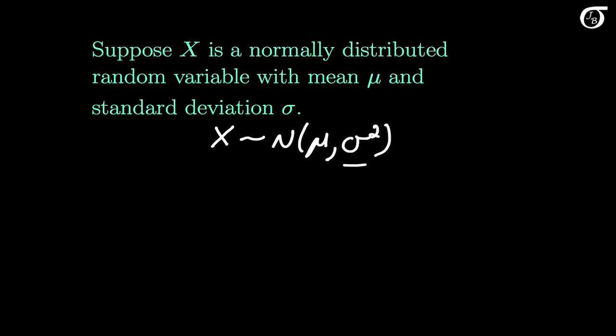Now we are going to standardize this — turn it into a random variable that has the standard normal distribution by using a basic linear transformation. The random variable X has a mean of mu, so if we subtract mu from X, this quantity is going to have a mean of 0. And if we divide by the standard deviation sigma, we are forcing this quantity to have a standard deviation of 1. This is a linear transformation on the random variable X, and the transformed variable has a mean of 0 and a standard deviation of 1.